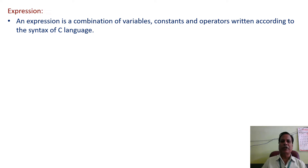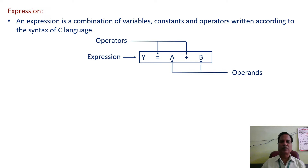An expression is a combination of variables, constants, and operators written according to the syntax of the C language. If we see this diagram, we see that an expression y = a + b is written. In this expression, we have three variables: y, a, and b. Two operators are present: the assignment operator and the addition operator. Here, a and b are called operands.